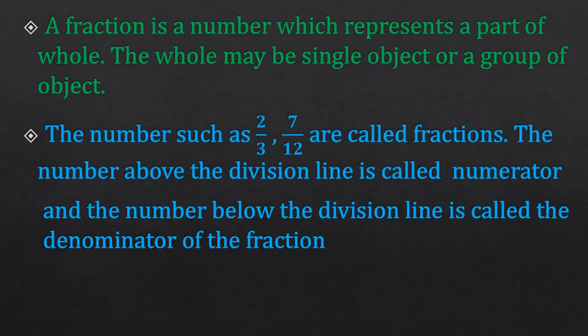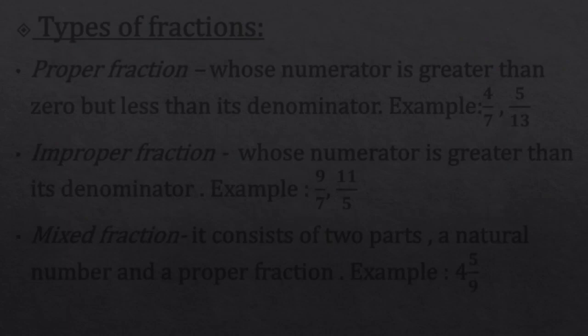We have learned how to make a fraction. Numbers such as 2 upon 3 and 7 upon 12 are called fractions. The number written above the division line is called the numerator of the fraction, and the number written below the division line is called the denominator. In 2 upon 3, 2 is the numerator and 3 is the denominator. In 7 upon 12, 7 is the numerator and 12 is the denominator.